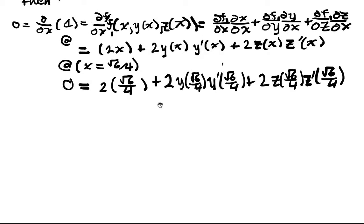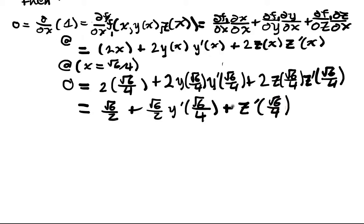And ultimately that boils down to an equation √6/2 + √6/2·y'(√6/4) + z'(√6/4). So I have a linear equation where my unknowns are y' at this point and z' at this point.